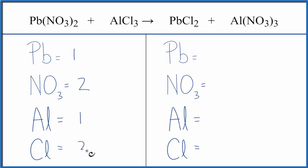On the product side, I have 1 lead, and then I have 1 nitrate times 3. So I have 3 nitrates. Aluminum is 1, chlorines is 2.